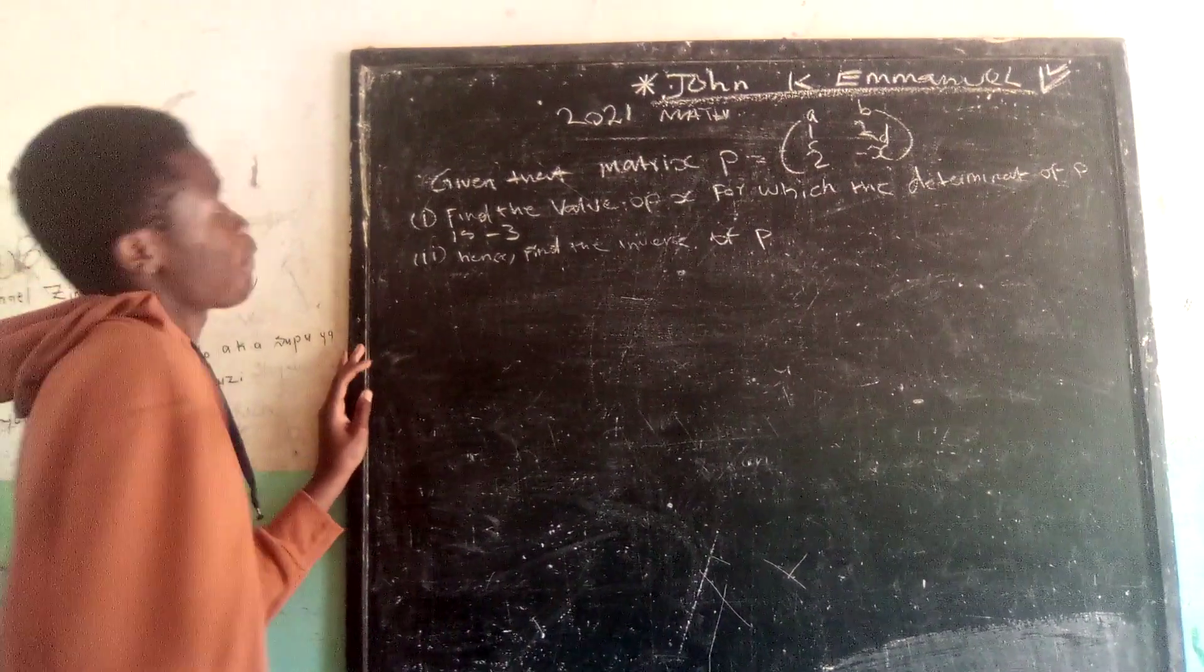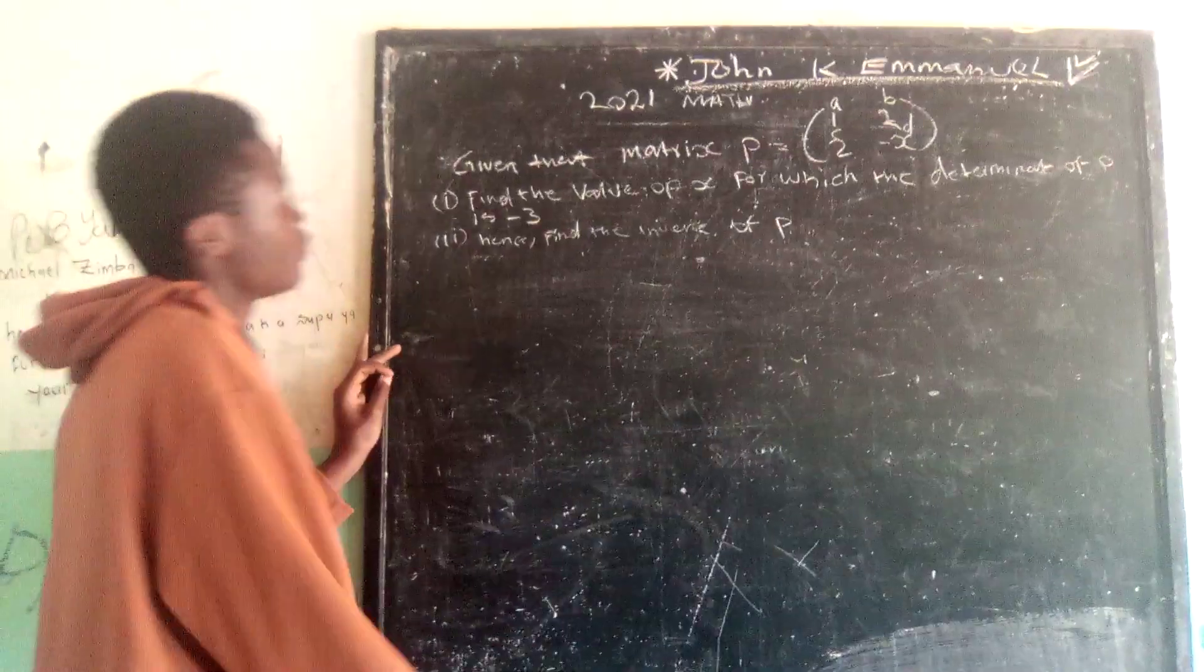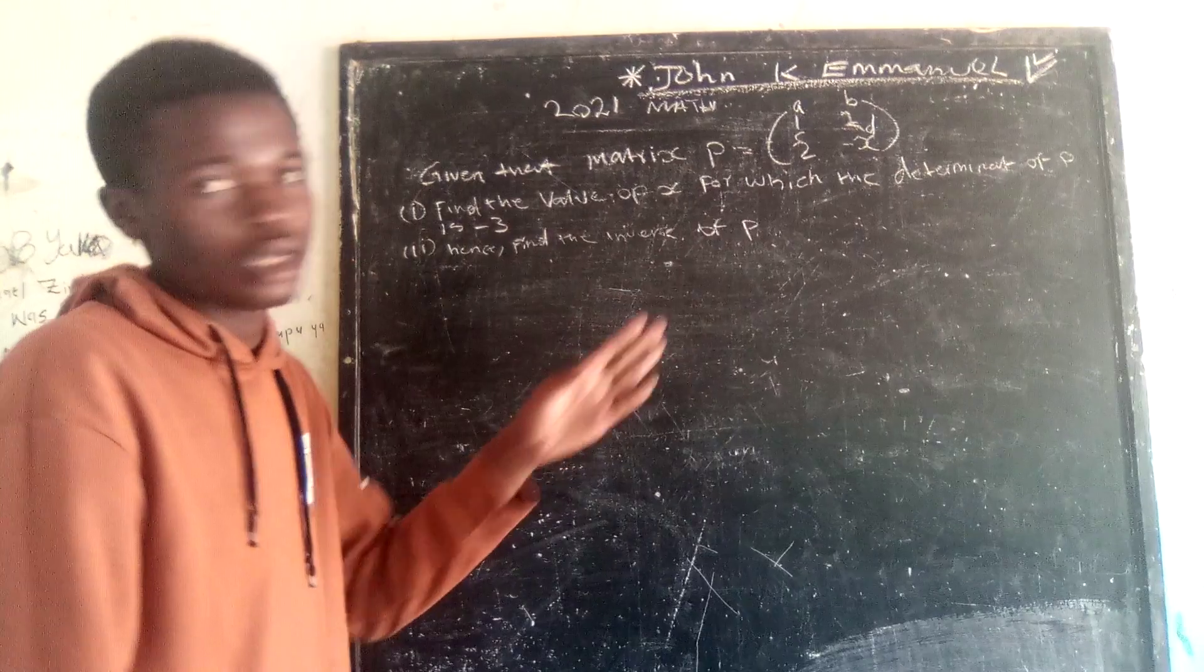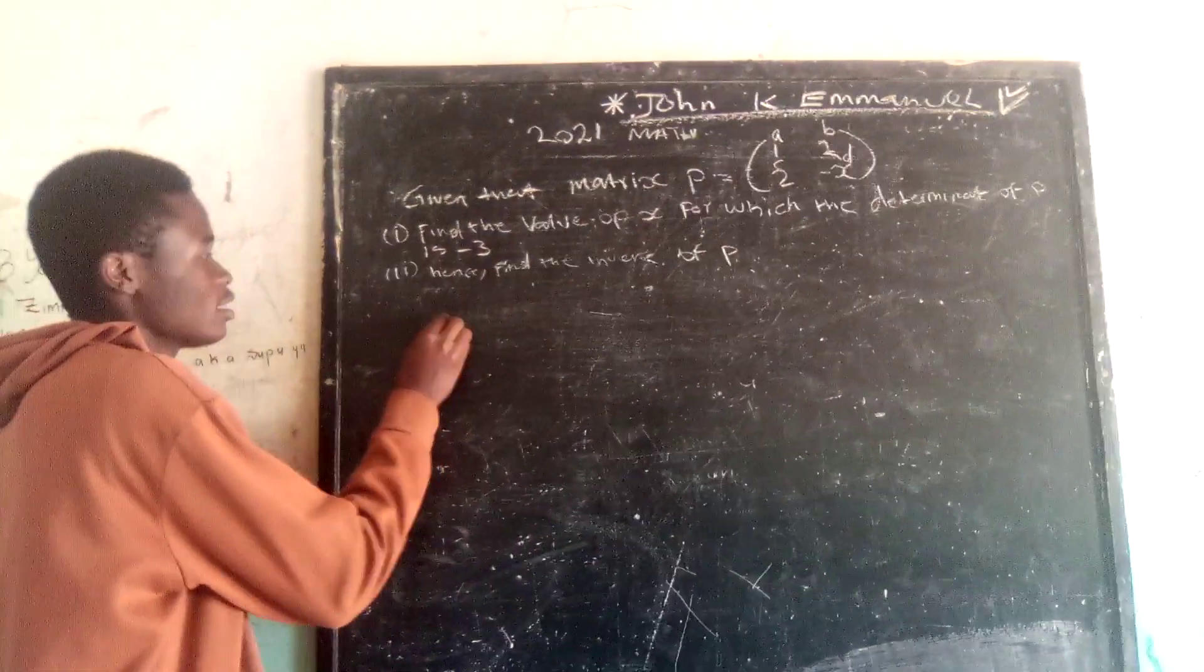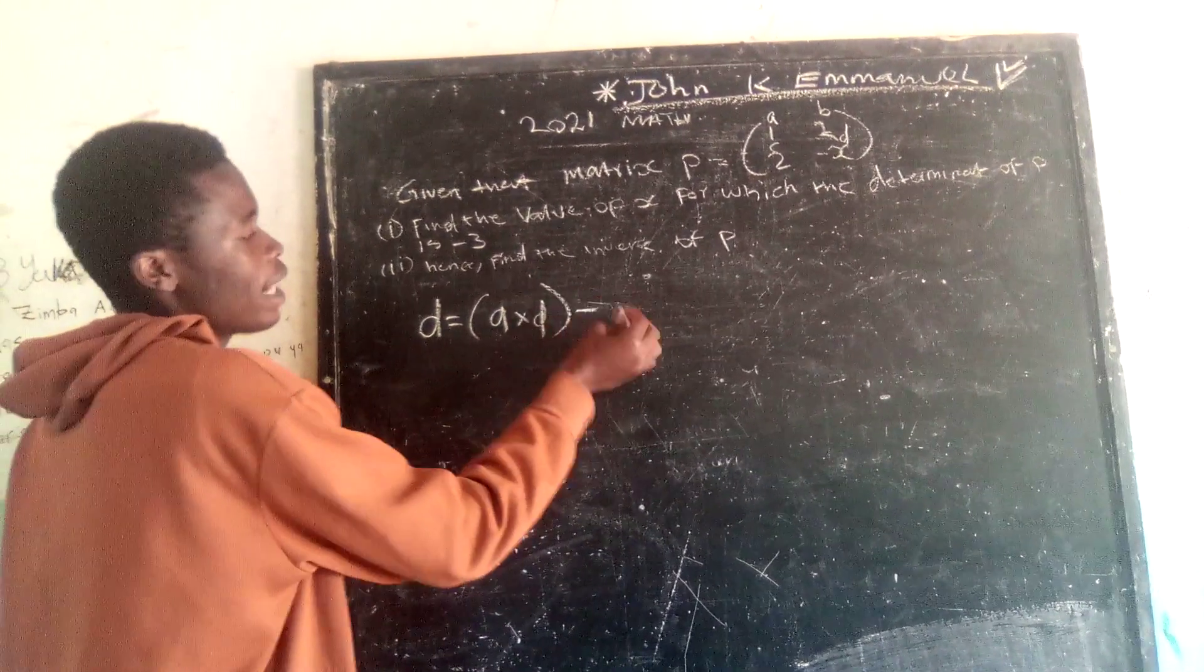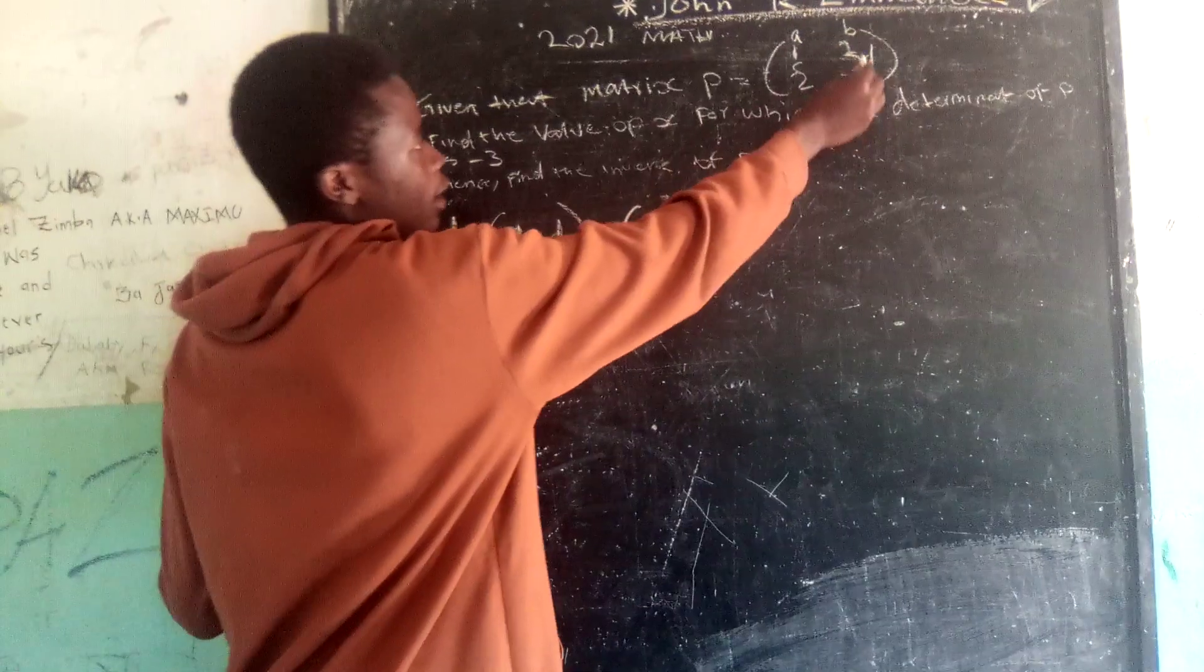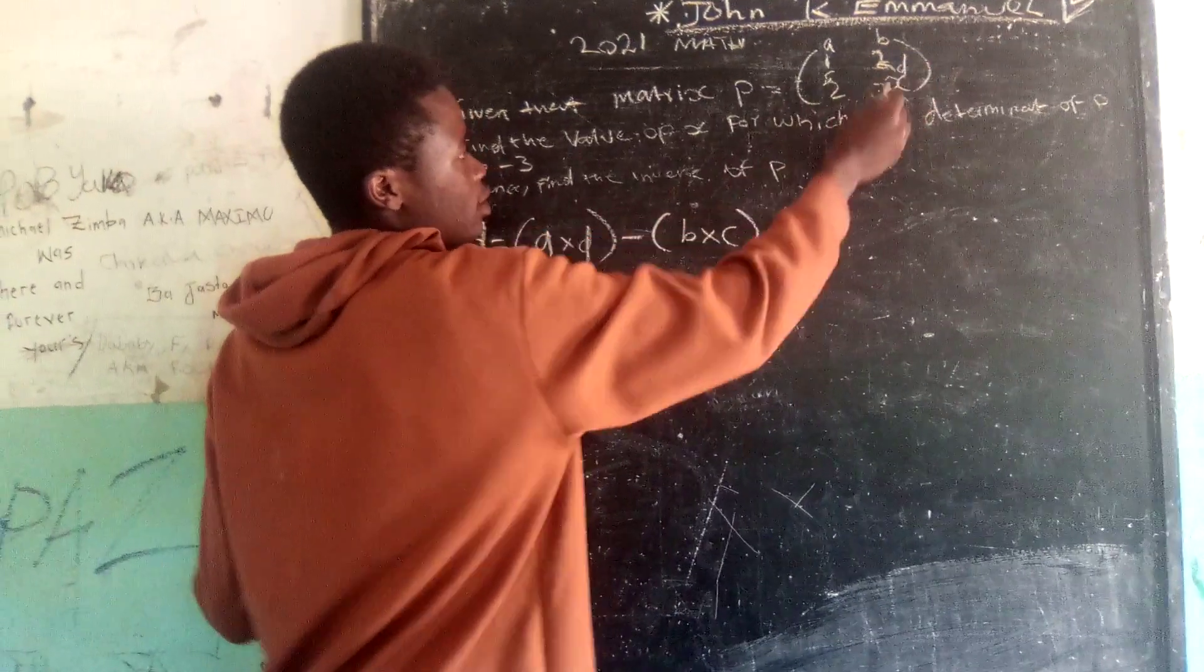So our question is saying that given that matrix P is equals to this one, then find the value of X for which the determinant of P is negative 3. So in finding the value of X, we have to use the formula for the determinant.